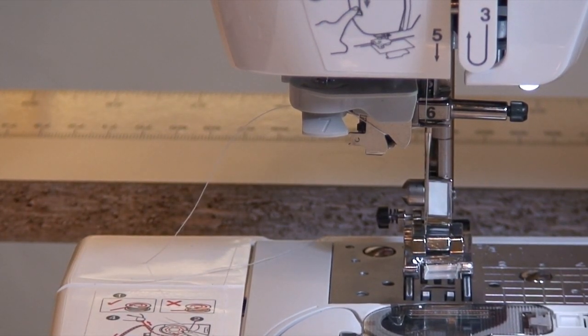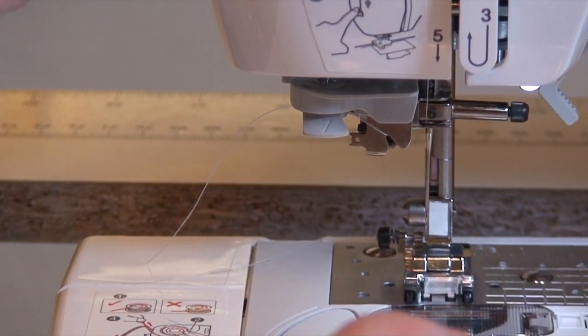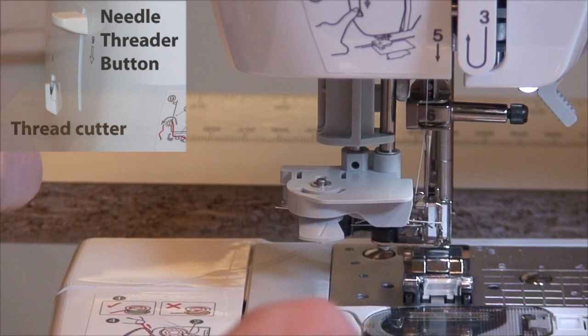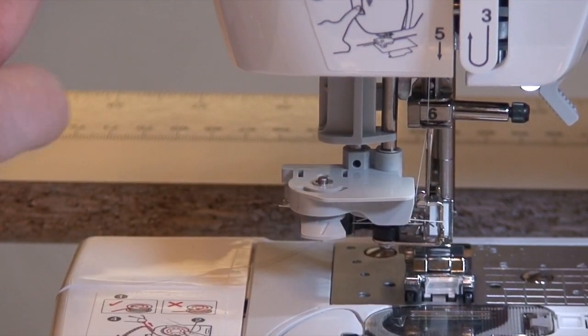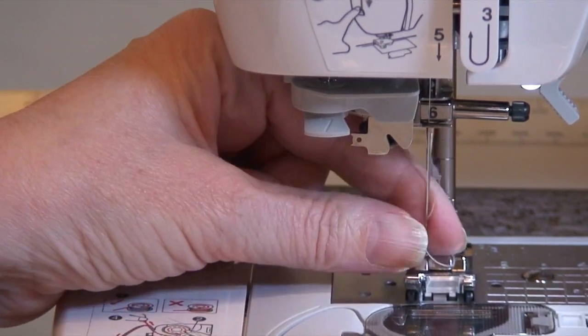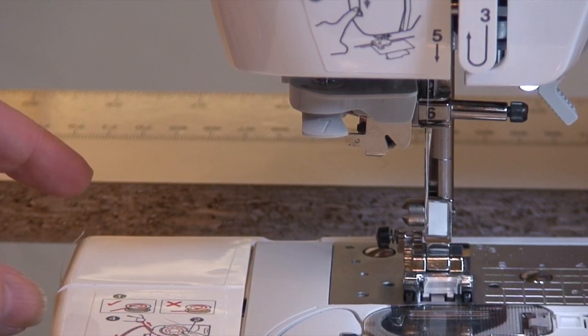So the next step, the manual recommends that you lower the presser foot. You're going to slowly press down on the needle threader button until the threader thing is through the needle, and you're going to slowly raise it up, and there'll be a loop back there that you can just pull out. And that's how easy it is to thread the needle.